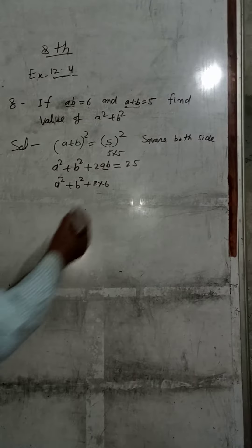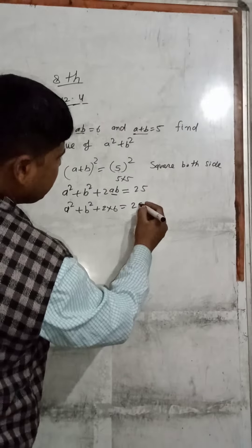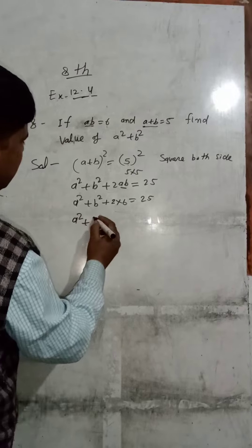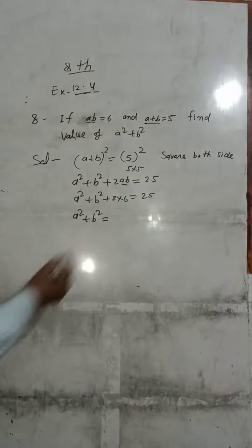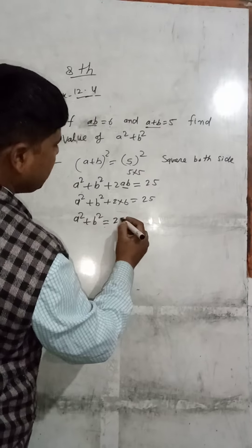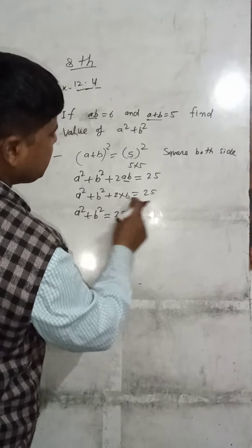2 into what? 25. A squared plus B squared equals 25 minus 12.